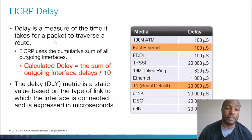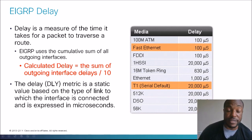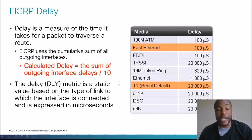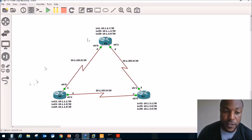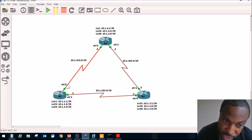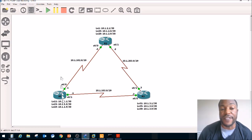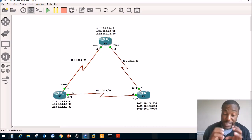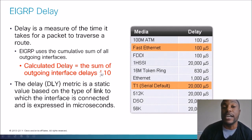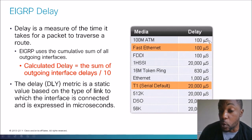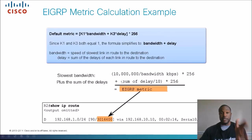For the delay part: this is how we calculate our delay. It's the sum of the delay of the outgoing interfaces divided by 10. So if we've got a topology and we're trying to get to a destination, you take the delay of the outgoing interface here plus the delay of the outgoing interface over here, and divide that by 10. The sum of outgoing interface delays divided by 10. This is given to you in microseconds — that little U symbol means microseconds, so it's 100 microseconds, not 100 seconds.